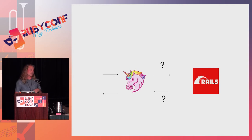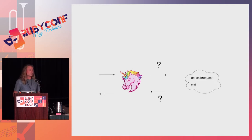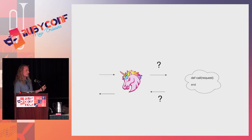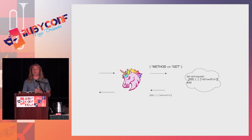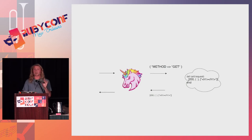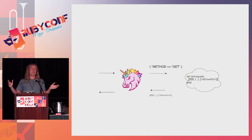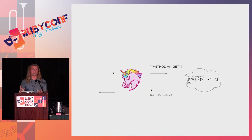Rack is a web server interface with a few very simple rules. If you're going to be a Rack-compliant Ruby web app, the entry point must define a method called 'call' that takes the request as an argument. If you're a Rack-compliant web server, you call that method and pass it the request as a Ruby hash. The Ruby library needs to return a triple — an array with three values: an HTTP status code, a hash of headers, and a body that responds to each. As long as you do that, we can all work together and swap things in and out. Rails, Sinatra, Hanami — they all have this entry point: call.